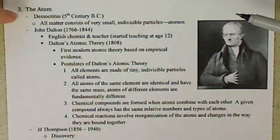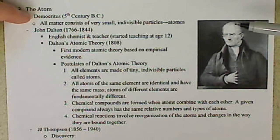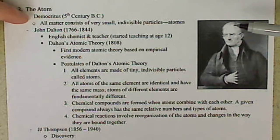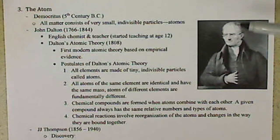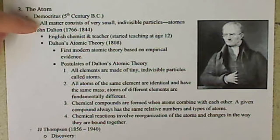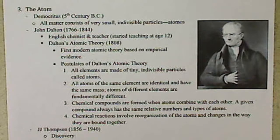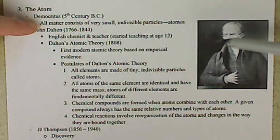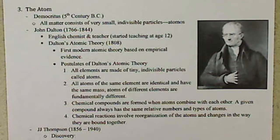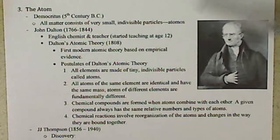So our original definition of the atom dates way back to the 5th century BC with Democritus. But basically it was back in time when they did thought experiments. They didn't have science. They didn't have experimentation. So they just basically thought of all matter as small, indivisible particles, and they called those atomos.